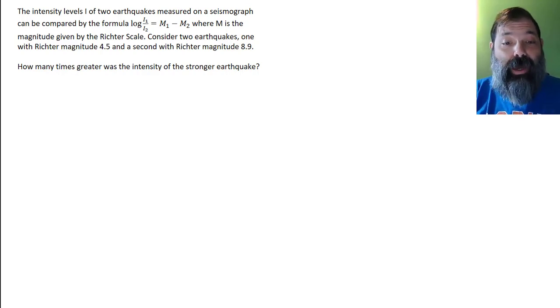The intensity levels, i, of two earthquakes measured on a seismograph can be compared by the formula log of i sub 1 over i sub 2 equals m sub 1 minus m sub 2, where m is the magnitude given by the Richter scale.